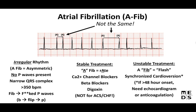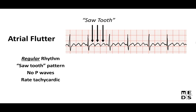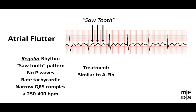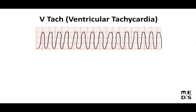Atrial flutter is similar to AFib but has a unique sawtooth appearance on EKG. It's a regular rhythm with equal, symmetric peaks, no P waves, narrow QRS complex, and rate roughly 250–400 BPM. Mnemonic: 'Did I stutter?' — the ST stands for sawtooth. Treatment is very similar to AFib. Mostly, questions just want you to identify it as atrial flutter.